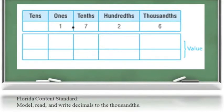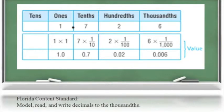They should be able to use this understanding of the base ten system, that each place is ten times the place to its right and one tenth of the place to its left, to notate the value as shown above. For example, one group of one, plus seven groups of one tenth, plus two groups of one hundredth, plus six groups of one thousandth.